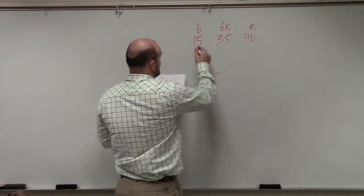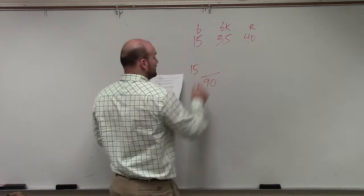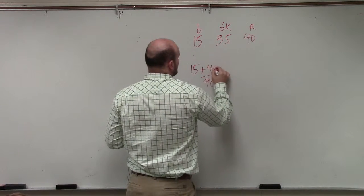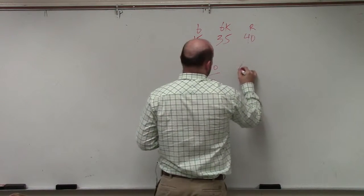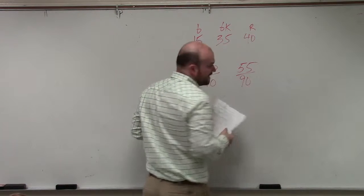So what we're going to do is add the number of blue pens, which would be 15, plus the number of red pens, which would be 40. So therefore, our probability is 55 over 90.